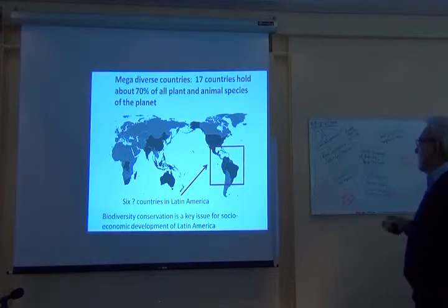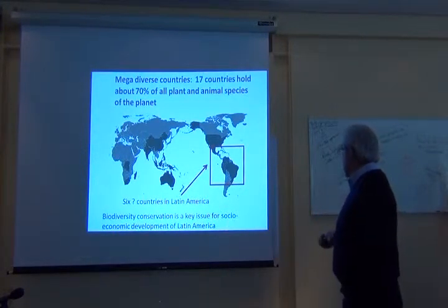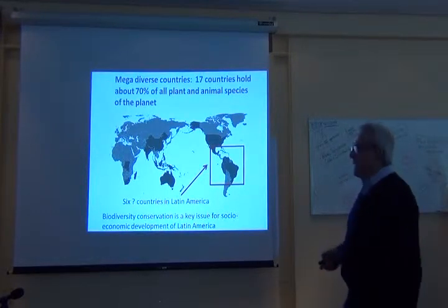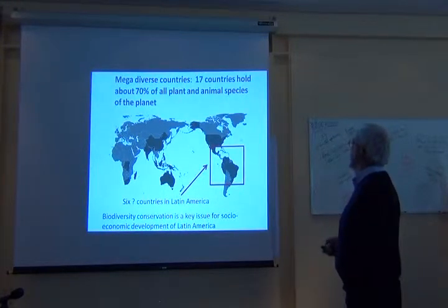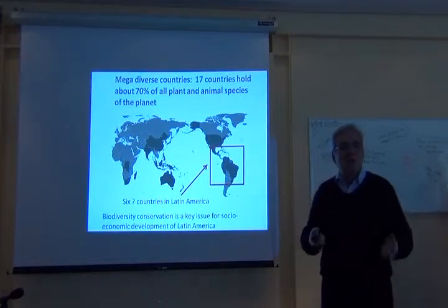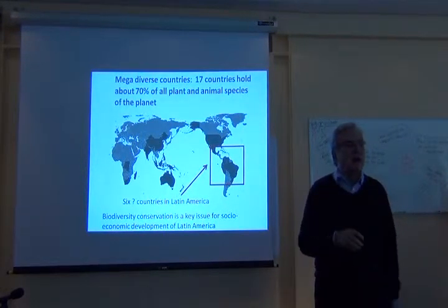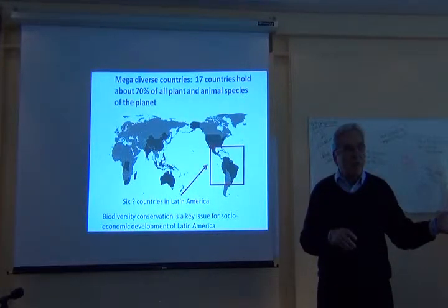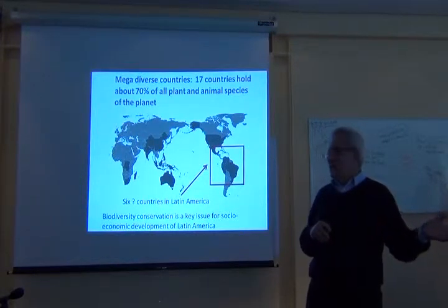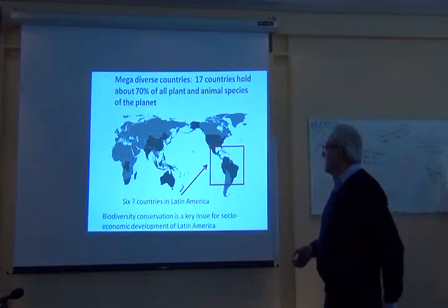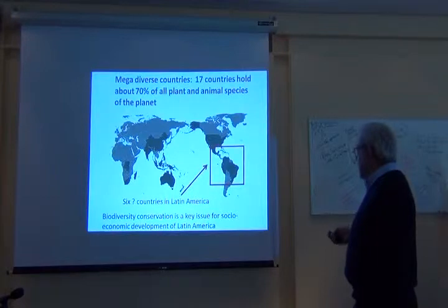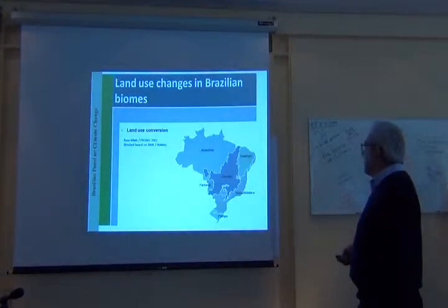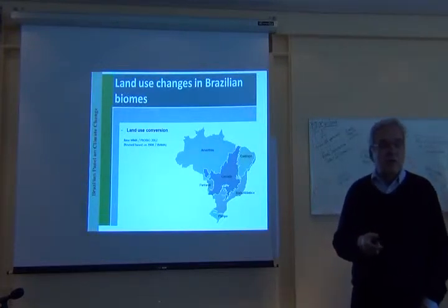When you think about South America and Latin America, analysis of hotspots shows that six countries in Latin America are megadiverse. About 70 percent of all plant and animal species are found in Latin America. In the past this type of analysis was done by the CBD with a lot of money for the Global Biodiversity Outlook, but now we have much better mechanisms to produce more precise and online information. Biodiversity conservation is a key issue for socioeconomic development in Latin America, as shown by this map of land conversion in Brazil.